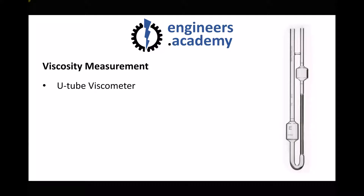The U-tube viscometer works as follows: first we pour our fluid in until it's in line with the lower index mark. Because hydrostatic pressure is maintained, the fluid also fills the lower bowl. We then apply suction to the right hand arm until the fluid reaches the upper index mark. When ready, we release the fluid and start a stopwatch, timing how long it takes for the fluid level to go from the upper index mark to the lower index mark on the upper bulb. The fluid must travel through a narrow capillary as it moves from the upper bulb to the lower bulb. Once the fluid passes the lower index mark we stop the stopwatch and determine the kinematic viscosity.